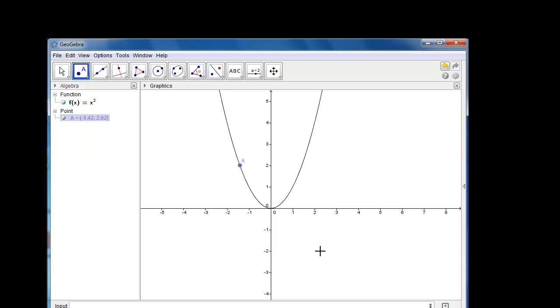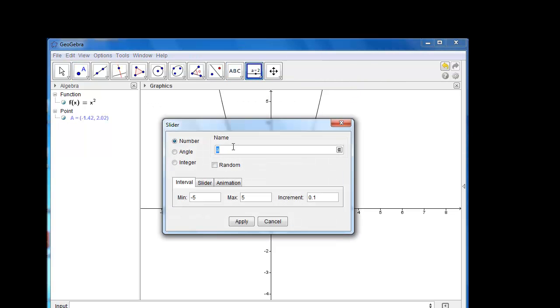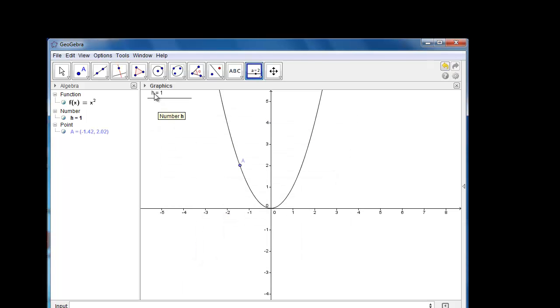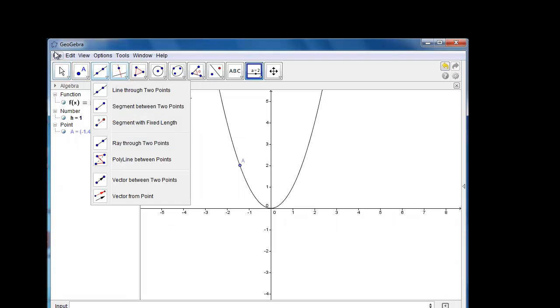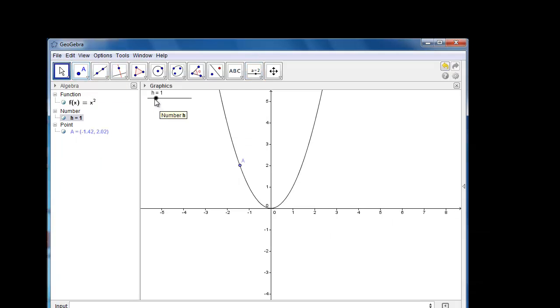Step number three, create a slider named H with the slider button. Slider button can be found here. Click where you'd like to create it. We're gonna name this slider H. We set the max and the min. The min will be set at 0.01. The max is fine at five but on our increment let's do 0.001. Apply those changes and now we have our slider where H equals one. Click back on the move tool and you can drag it to change the H value.